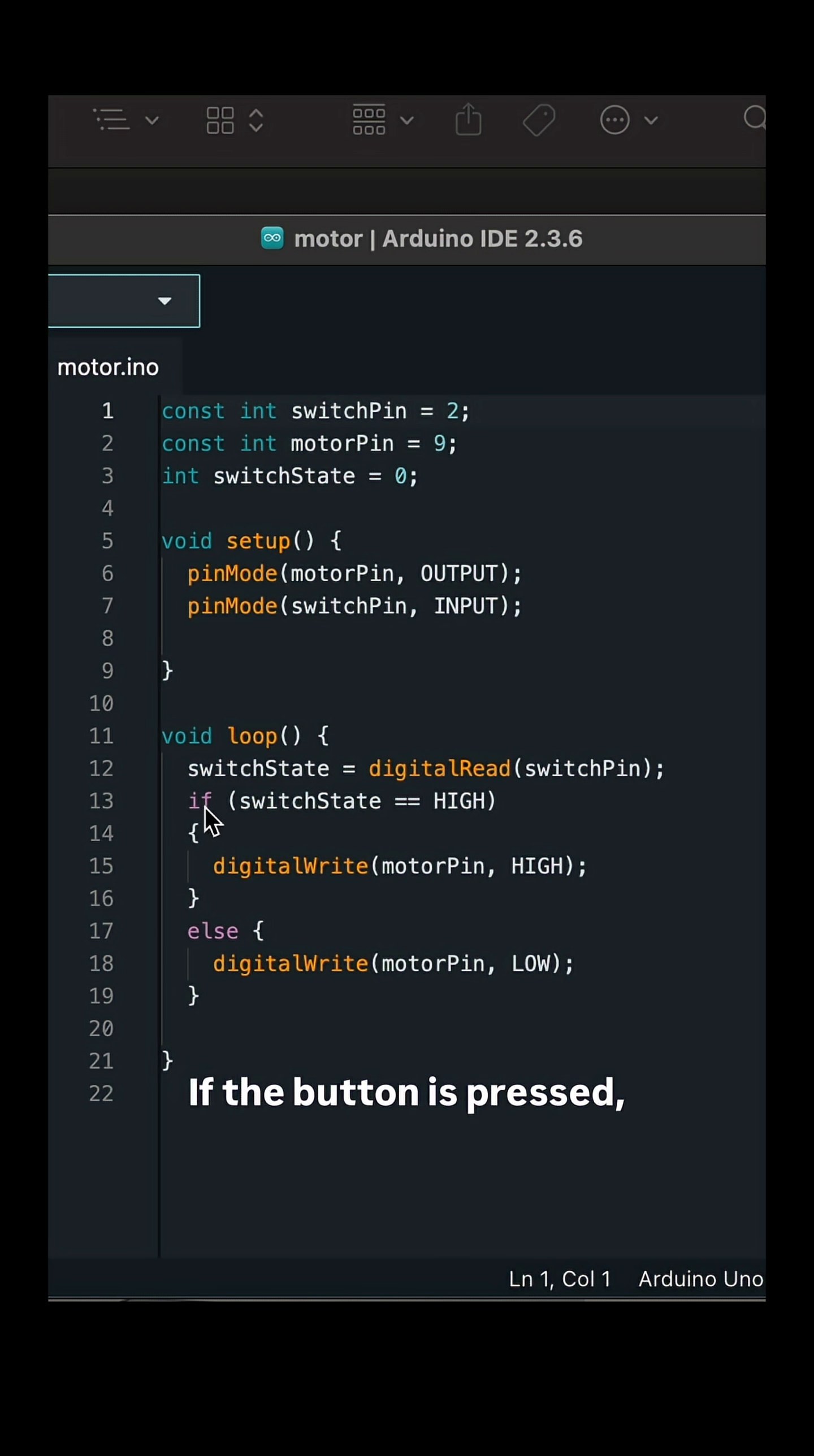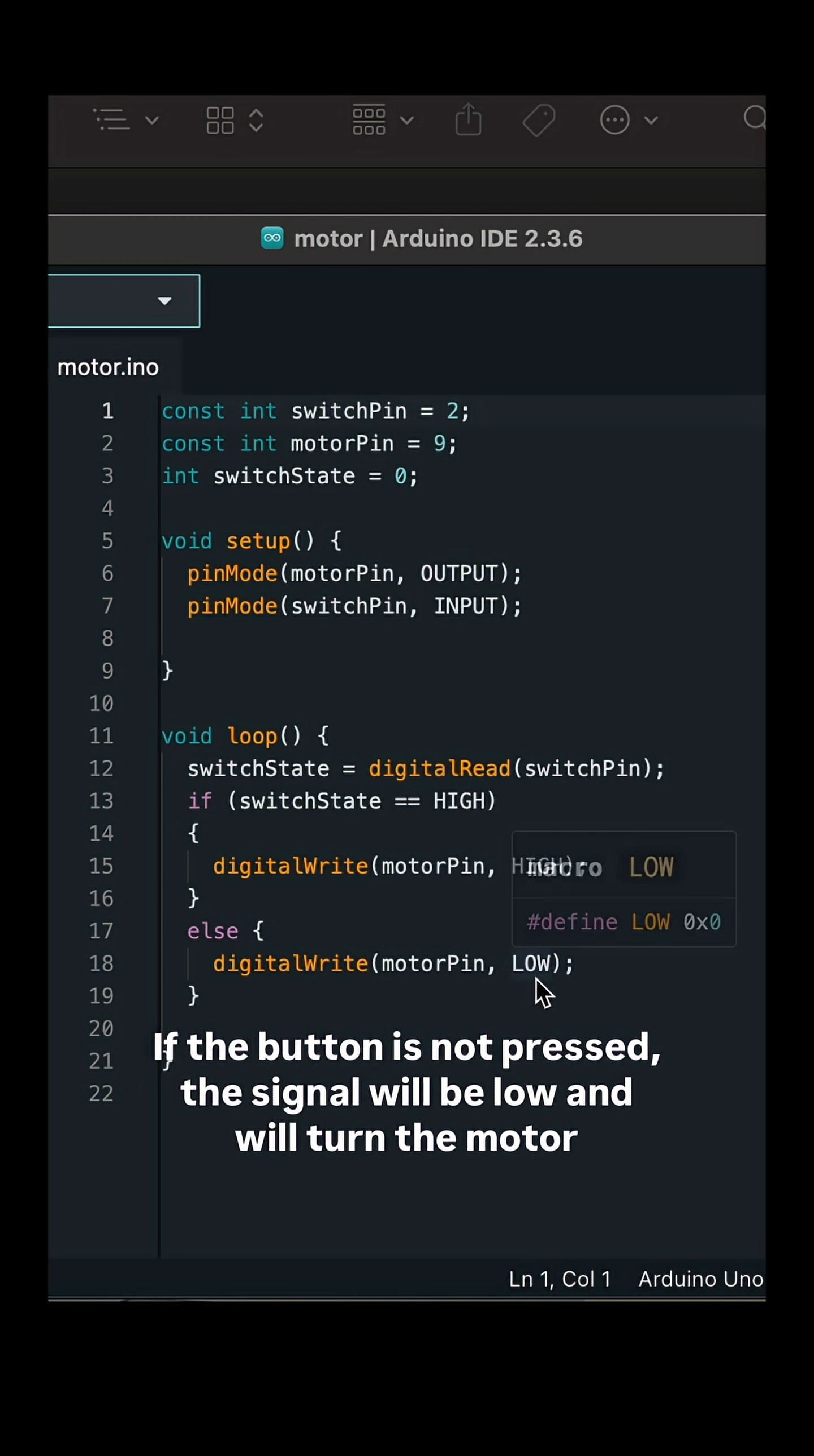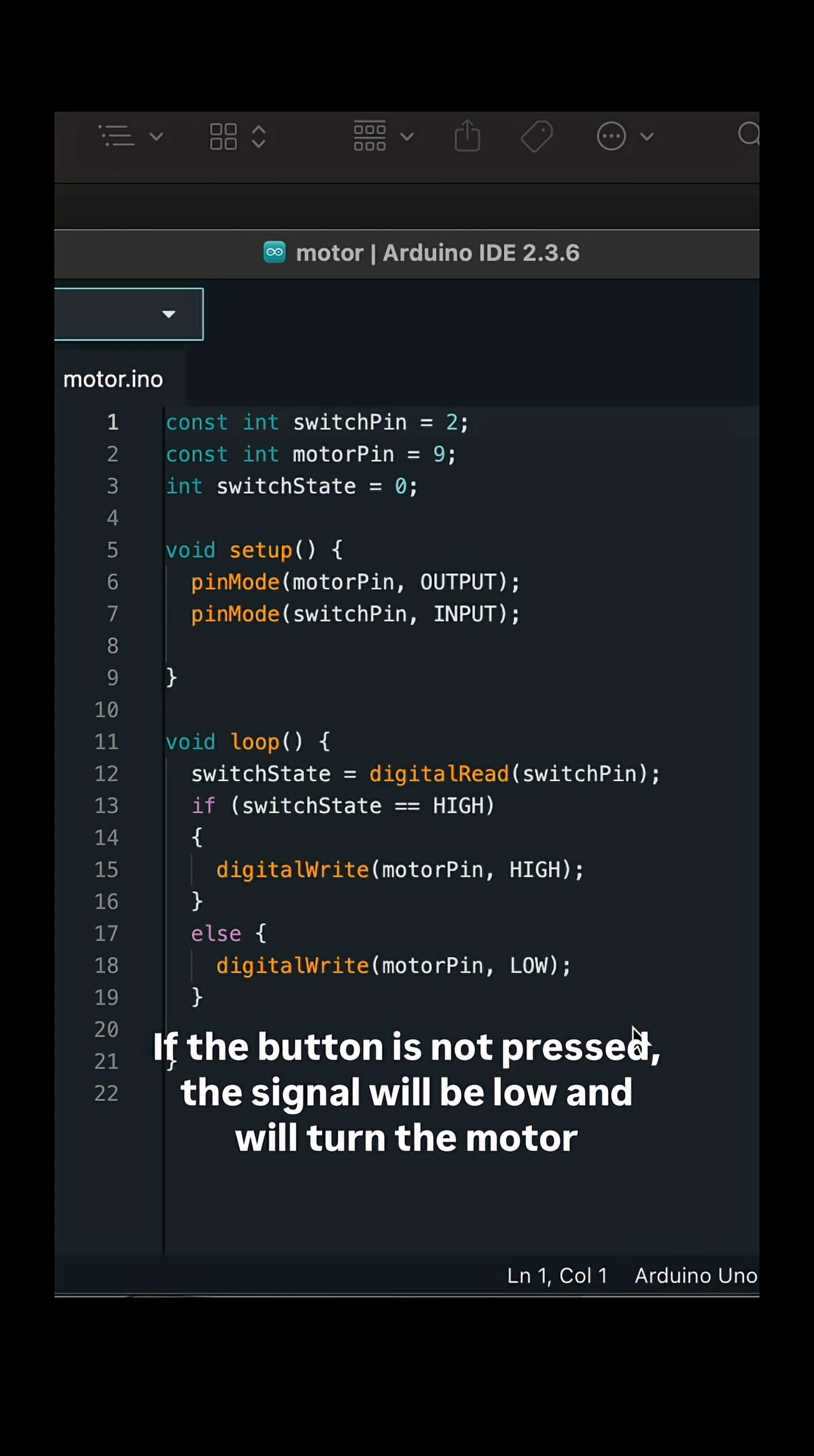In the loop, we use an if statement. If the button is pressed, the signal from the button pin will be high and will turn the motor on. If the button is not pressed, the signal will be low and will turn the motor off.